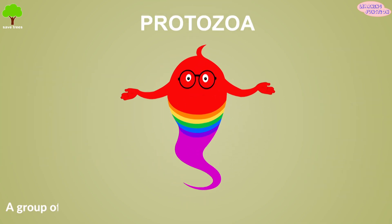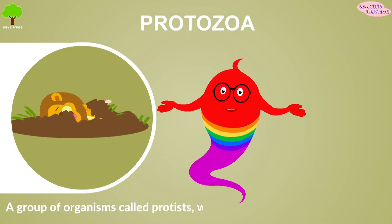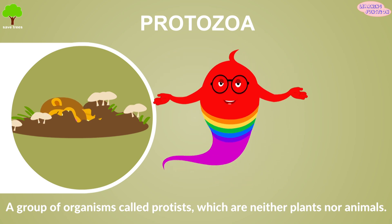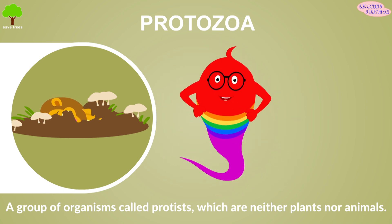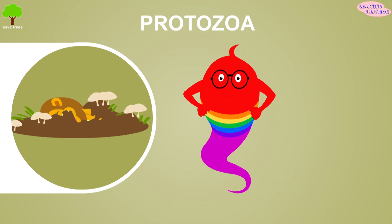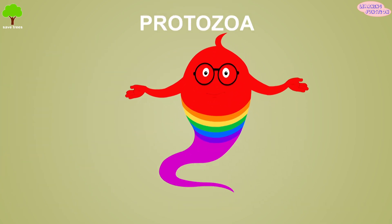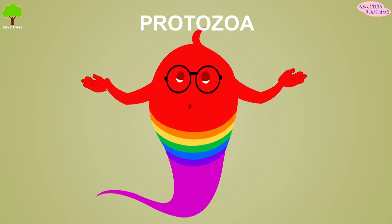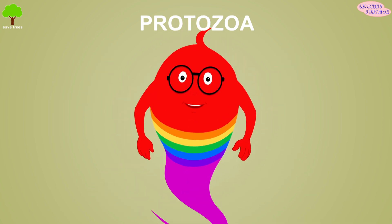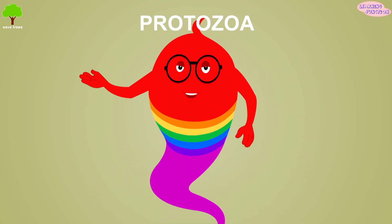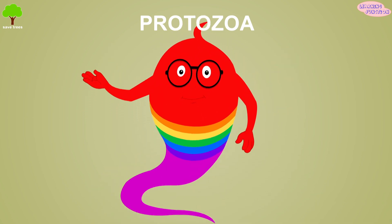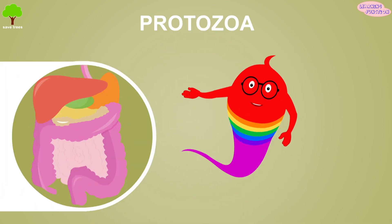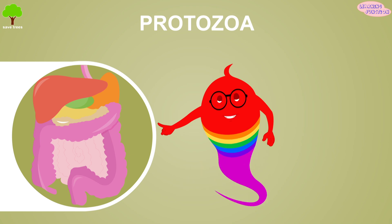Protozoa. They hasten the decomposition of the remains of dead animals and plants. But protozoa, like cryptosporidiosis, that spread through unclean water or food, usually affect the digestive system.